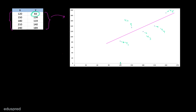Now let's also take a look at the fitted Y values. On this axis we have the X variable, and on this axis we have the Y variable. When X is equal to 120, as per the line, the fitted value is Y1 hat. When X is equal to 150, this fitted value is Y2 hat. For X equal to 180, this is the third fitted value, Y3 hat. For X equal to 210, this is Y4 hat, and for X equal to 240, this is the fifth fitted value, Y5 hat.